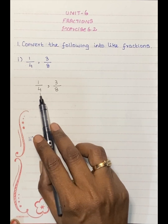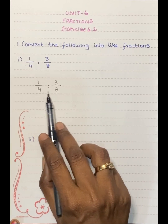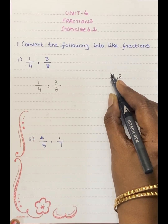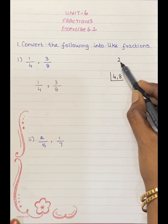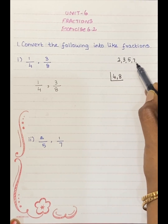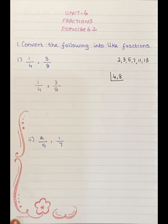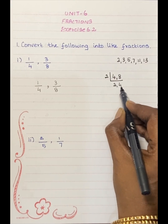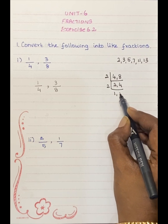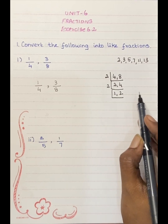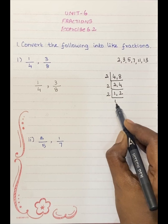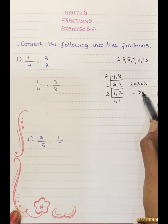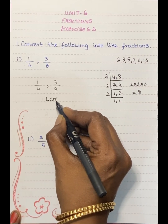The question is 1 by 4 and 3 by 8. We will find the LCM of 4 and 8. The prime numbers used are 2, 3, 5, 7, 11, 13. We start with 2: 2 twos are 4, 2 fours are 8. So LCM is 2 into 2 into 2. That gives us 2 twos are 4, 4 twos are 8. So LCM is equal to 8.